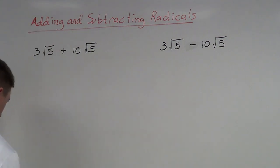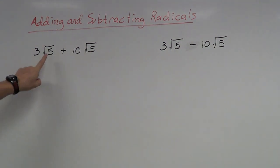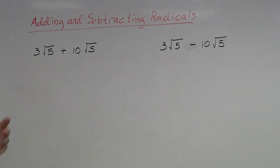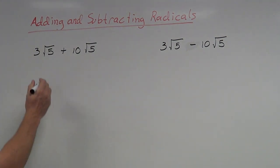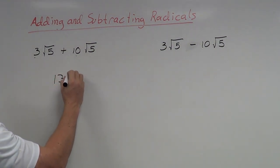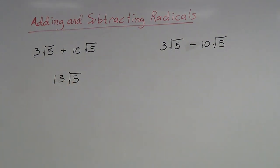We're going to take that same concept and apply it to radicals. The key rule is: if two terms have the same radical, you add the coefficients together. For example, 3 root 5 plus 10 root 5 — I see a root 5 and a root 5, so they are alike and I can add them. Taking the coefficients, 3 plus 10 gives me 13 root 5.